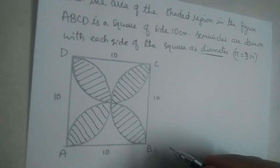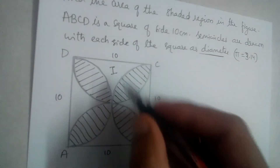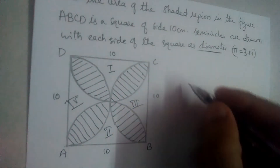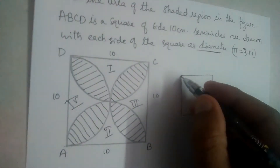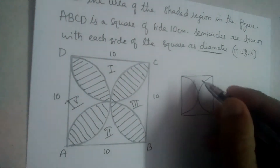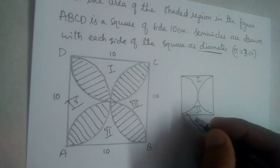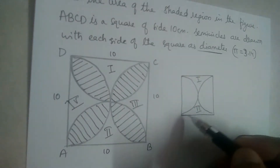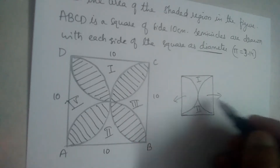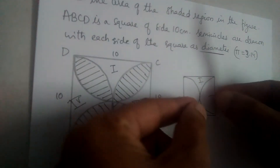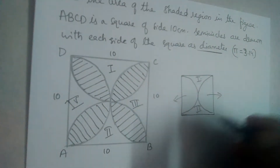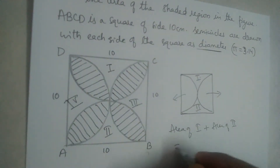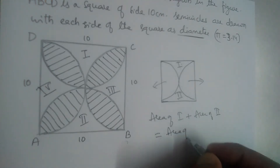Now let us name the unshaded regions as 1, 2, 3, and 4. Let us first find the area of regions 1 and 2. From the area of the square, if we subtract the area of 2 semicircles — if we take out these two semicircles — we'll get the area of 1 and 2. So: area of 1 plus area of 2 equals area of square minus area of 2 semicircles.